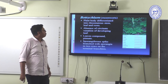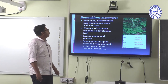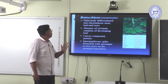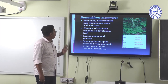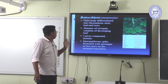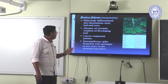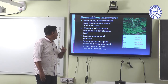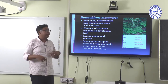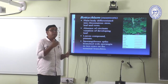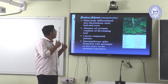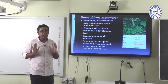Botrychium — moonworts. The plant body is differentiated into rhizomatous stem, leaf, and root. Absence of circinate venation in the developing leaf is a similarity with Ophioglossum. Leaves are compound. The pinnate sporangifera spike is branched with sporangia in two rows on the terminal branches.